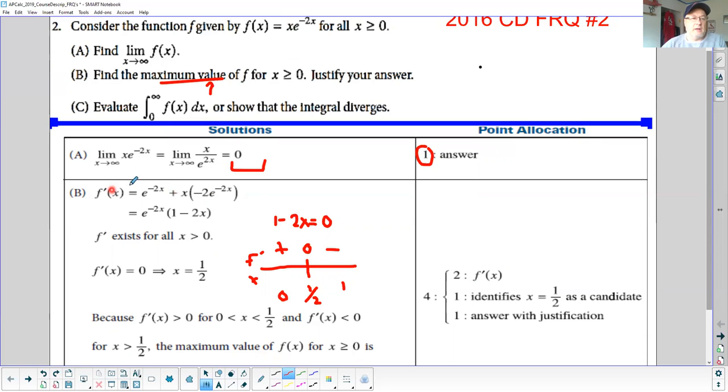The first is x, so the first times the derivative of the second, e to the negative 2x times negative 2, plus the second times the first derivative. At this point you have to determine when this is zero without a calculator. The best way is to factor out e to the negative 2x, and you get 1 minus 2x. E to the negative 2x is never zero, so set 1 minus 2x equal to zero, and you get x equals one half.